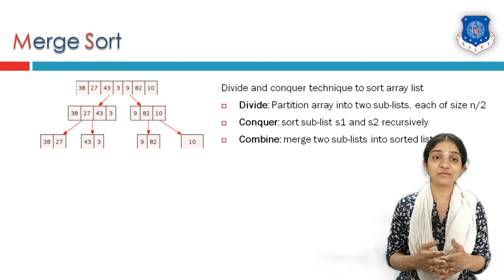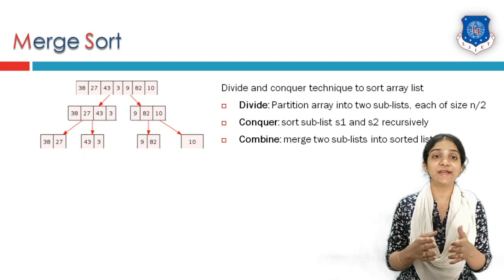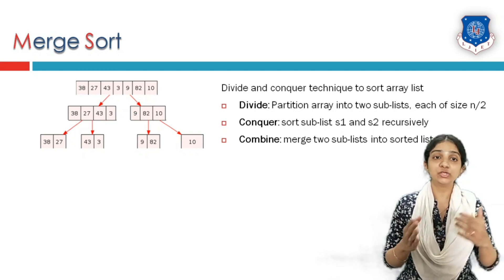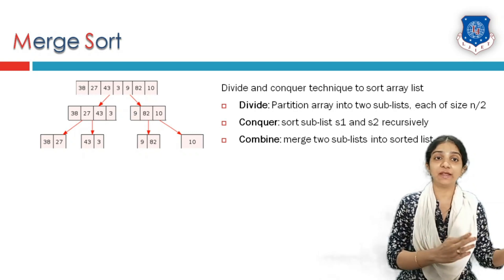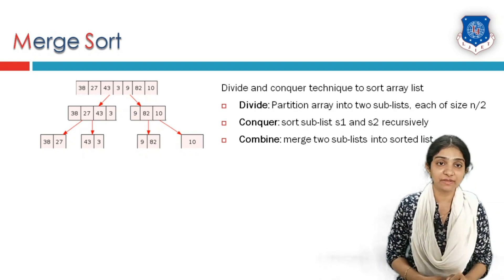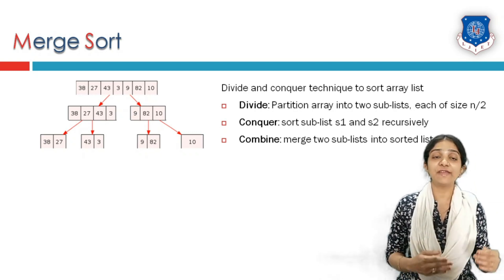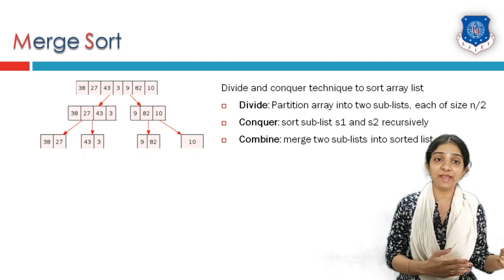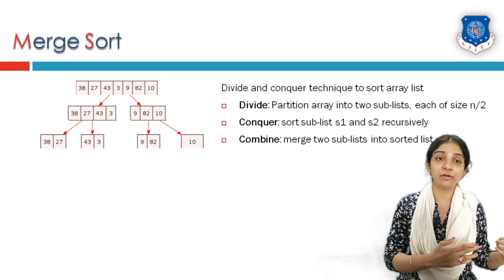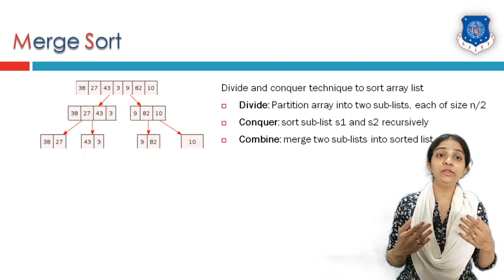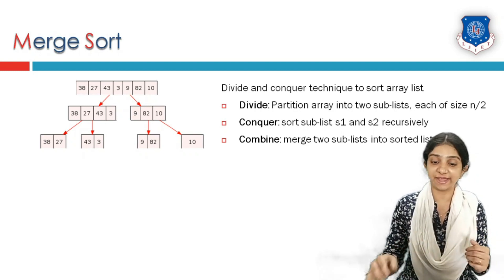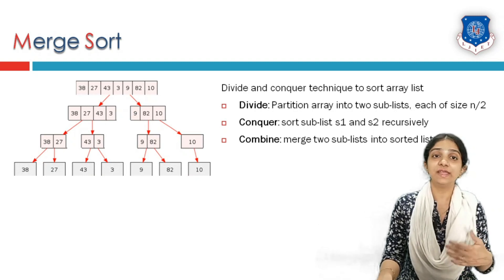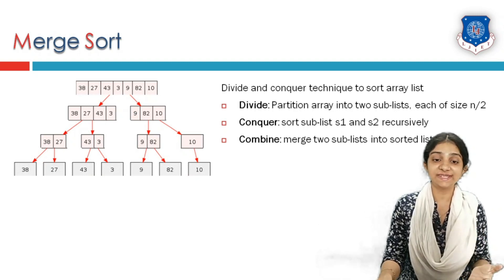A sublist containing three elements is divided into two sublists — one with two elements and another with one element. If any sublist contains one element, we cannot further divide it. Only sublists containing more than one element get divided. Likewise, they are again divided further.